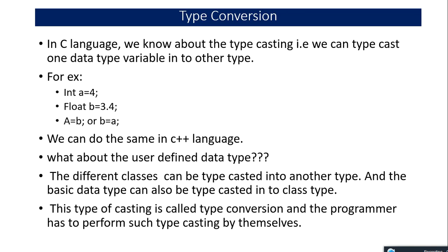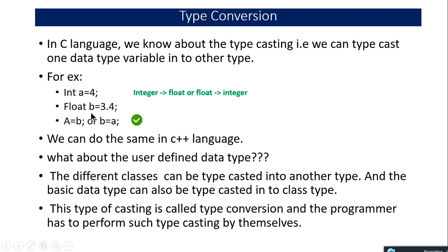First of all, let's talk about type conversion and basic data types. In C language, you have studied about type casting where we cast one data type variable into another. For example, if int a equals four and float b is declared, you can do b equals a or a equals b, casting float to integer or integer to float. This type casting is automatically performed by the compiler, and we can do the same thing in C++ as well.